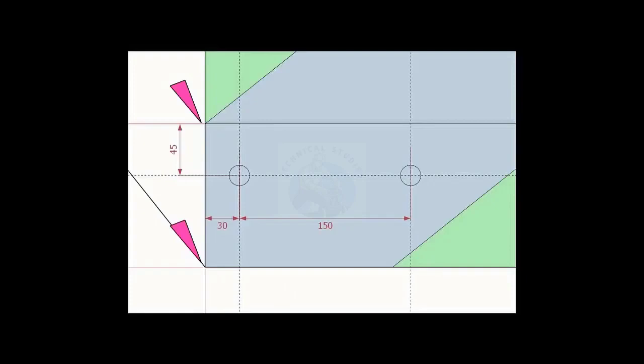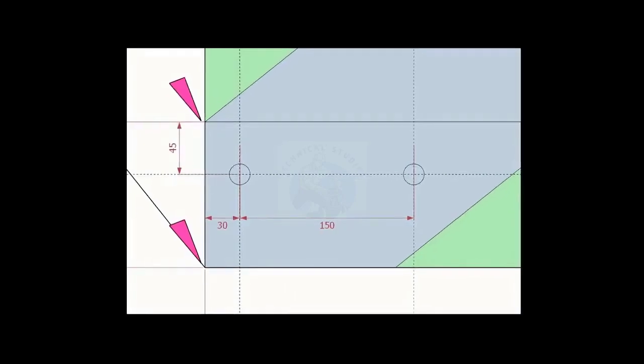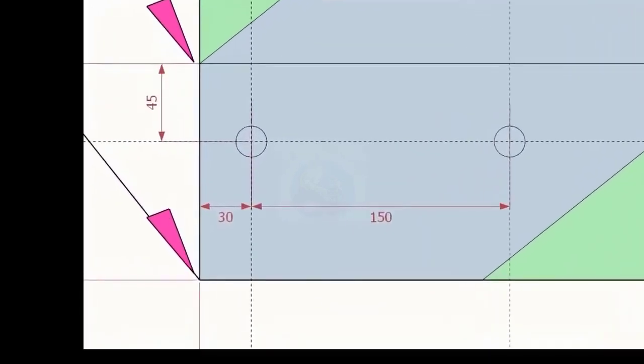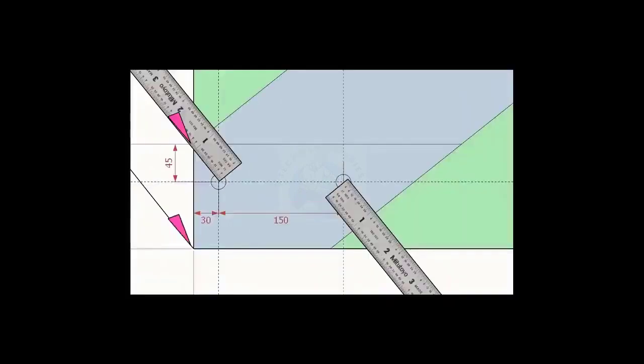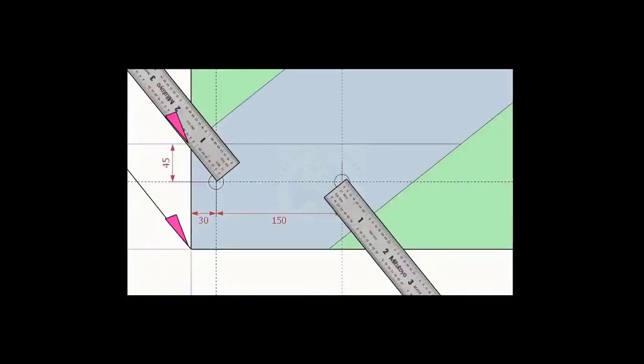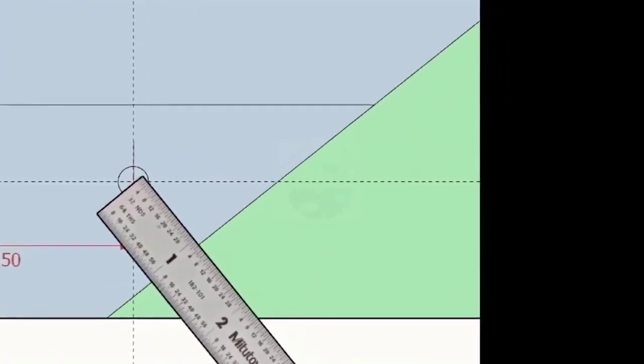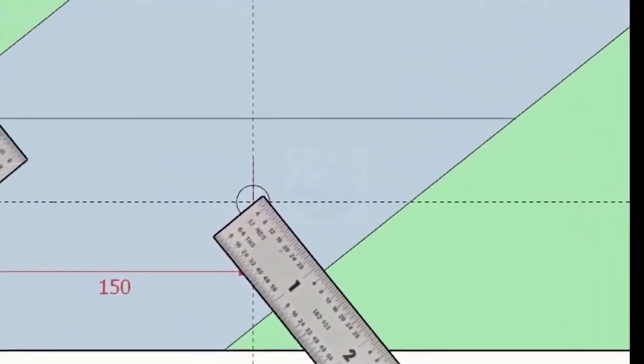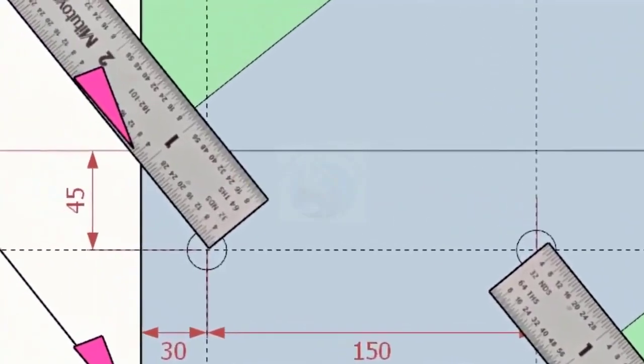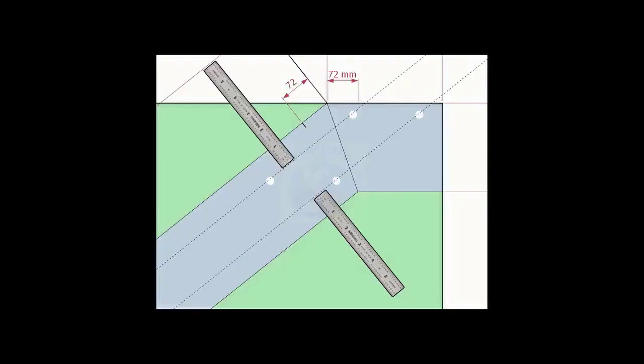Mark the locations of the bolt holes on the layout as per given in the drawing. Note down the distance from the edge of the layout and the hole center on both sides. Transfer the distance to the other end and draw lines.